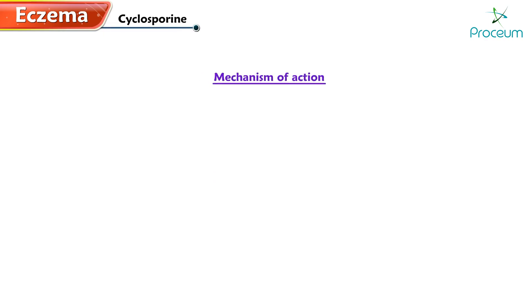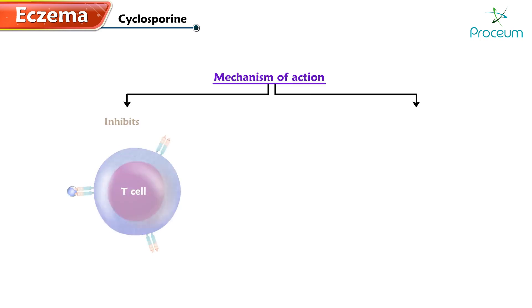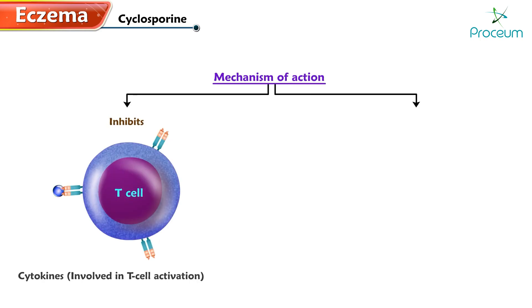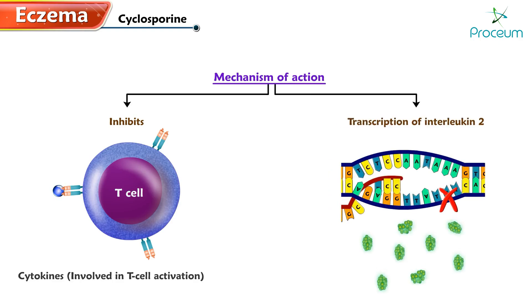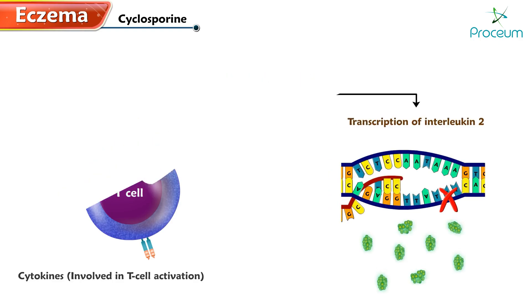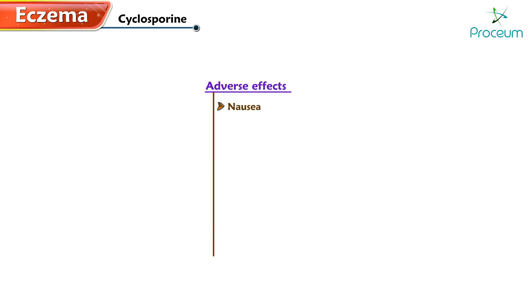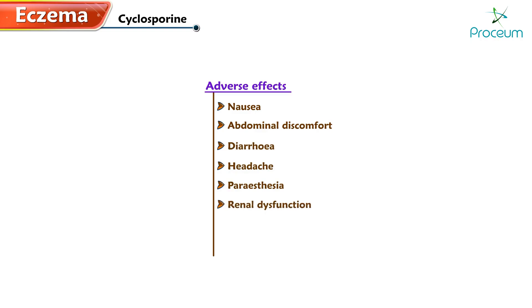Finally, let's take a look at cyclosporine. Its mechanism of action involves inhibiting cytokines that are involved in T-cell activation, and it also inhibits the transcription of interleukin-2. Adverse effects include nausea, abdominal discomfort, diarrhea, headache, paresthesia, renal dysfunction, hypertension, and electrolyte imbalance. Thank you for listening to this module about eczema.